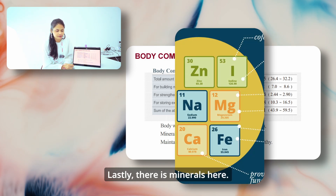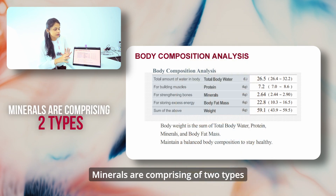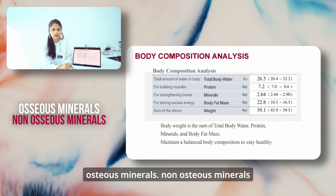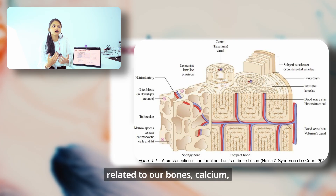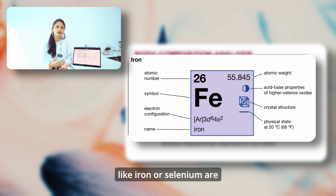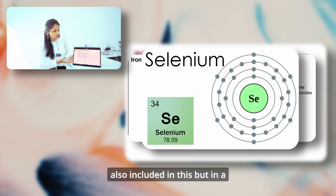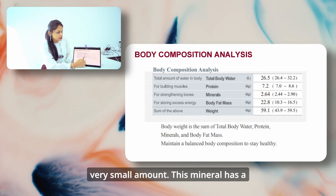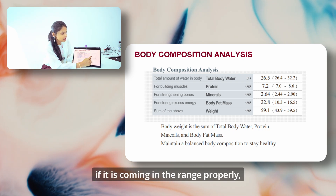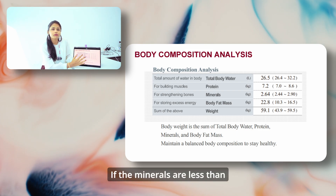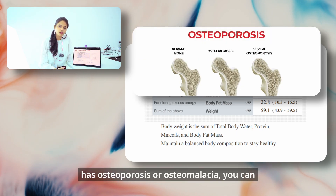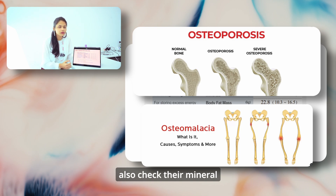There are minerals here, comprising two types specifically in this result sheet: osseous minerals and non-osseous minerals. Osseous minerals are related to our bones — calcium and magnesium — while non-osseous ones like iron or selenium are also included in a very small amount. This mineral parameter has a direct correlation with bone health. If it is coming in range, bone health is good. If minerals are less, the diet can be monitored or supplements given. So when somebody has osteoporosis or osteomalacia, you can also check their mineral levels here.